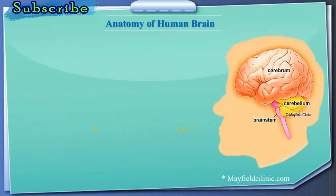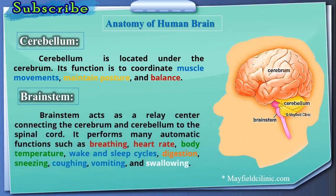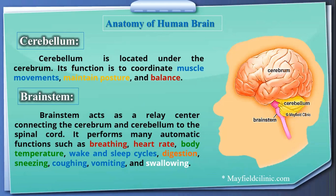The cerebellum is located under the cerebrum. Its function is to coordinate muscle movements, maintain posture and balance. The brain stem acts as a relay center connecting the cerebrum and cerebellum to the spinal cord. It performs many automatic functions such as breathing, heart rate, body temperature, sleep cycles, digestion, sneezing, coughing, vomiting, and swallowing.